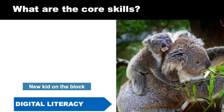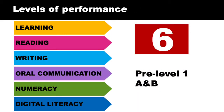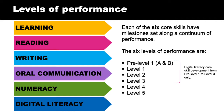Digital literacy has been developed later, so it's not in the main book. The ACSF has six levels of performance, ranging from pre-level one, low level performance, to level five, which is high level performance. Each of the six core skills have milestones set along a continuum of performance. Pre-level one has been divided into parts A and B to acknowledge the progress at these very low levels.